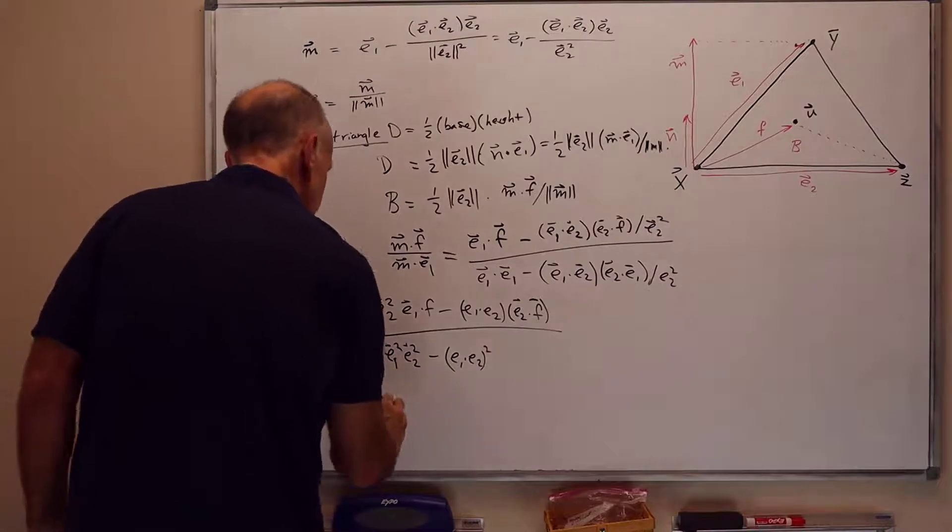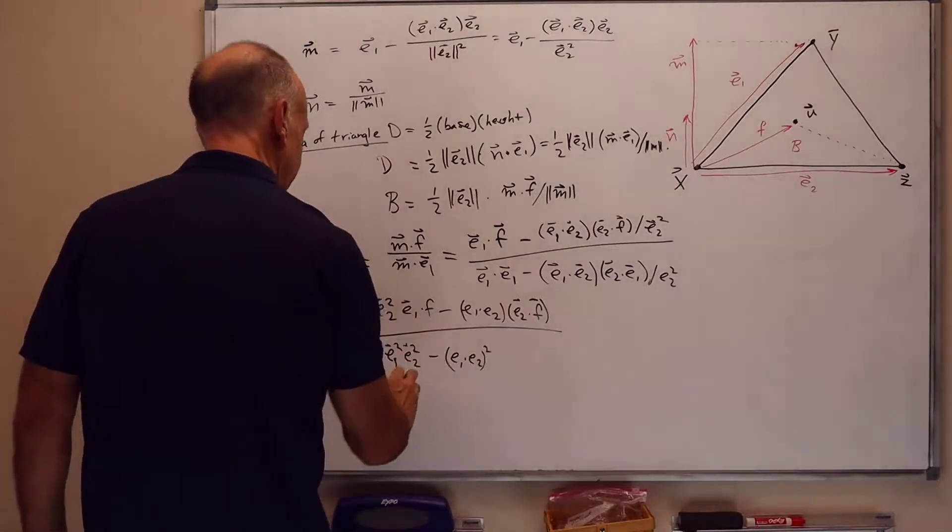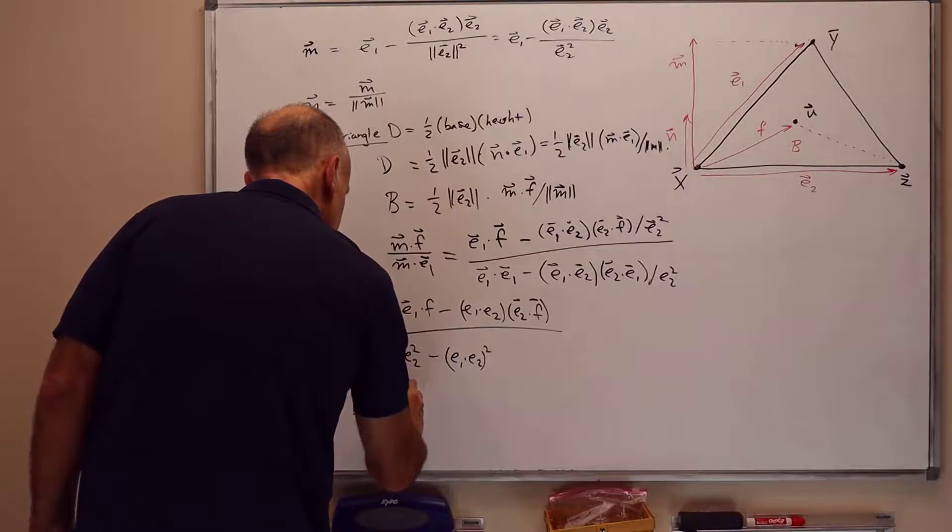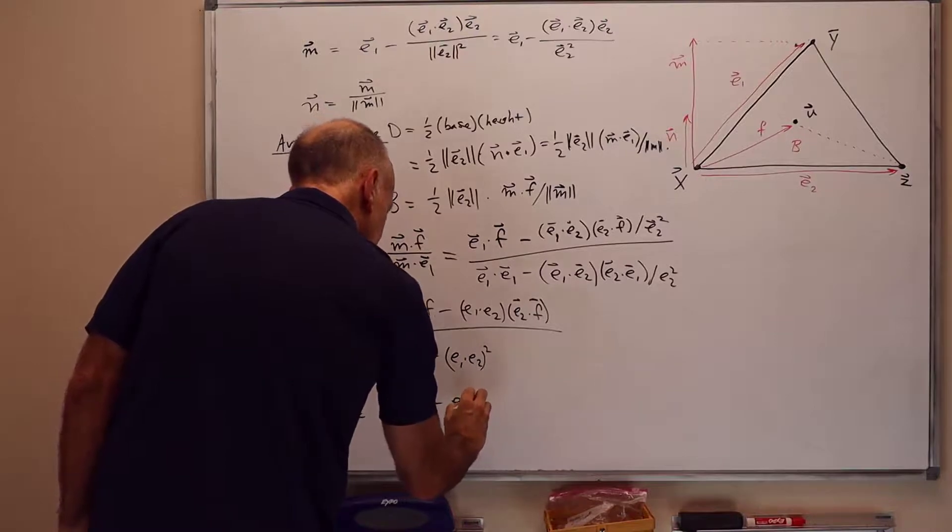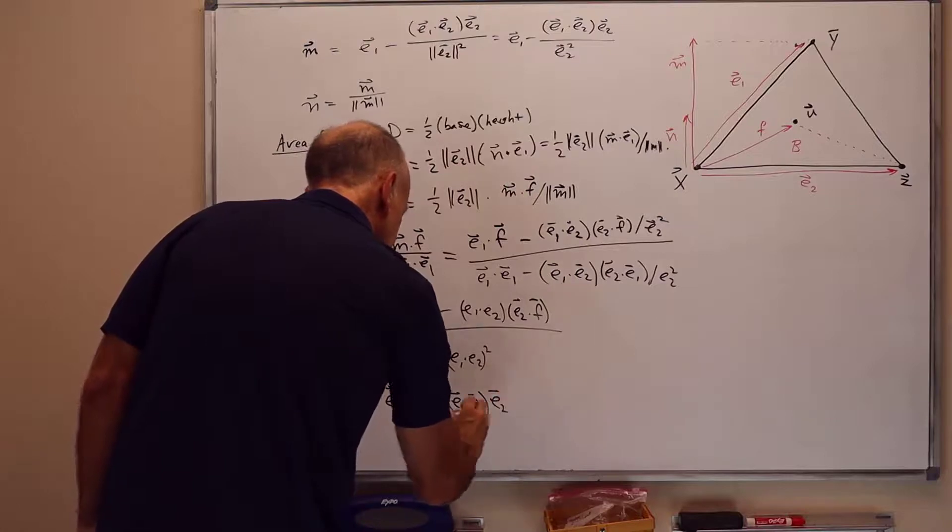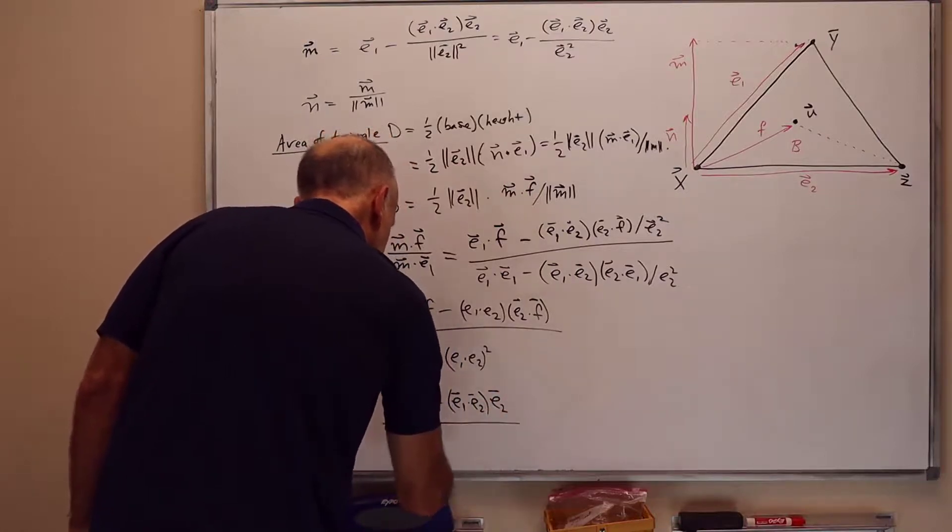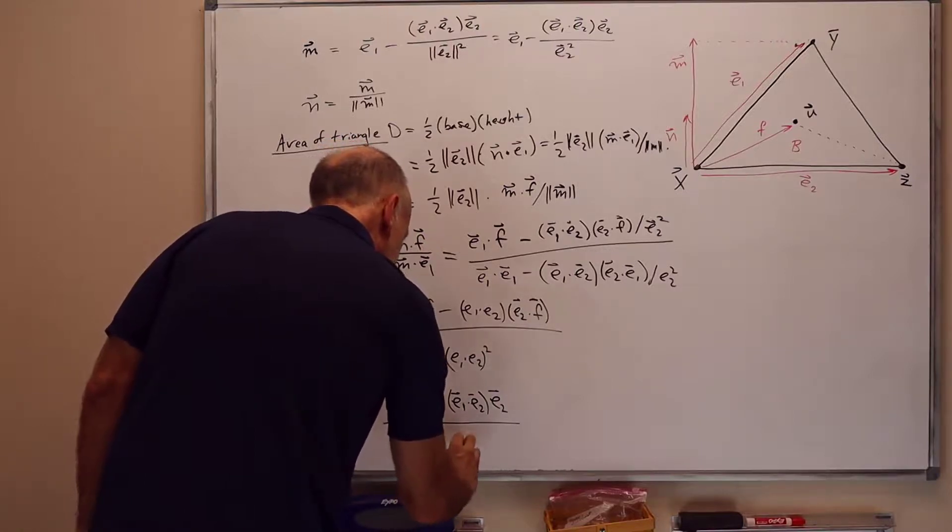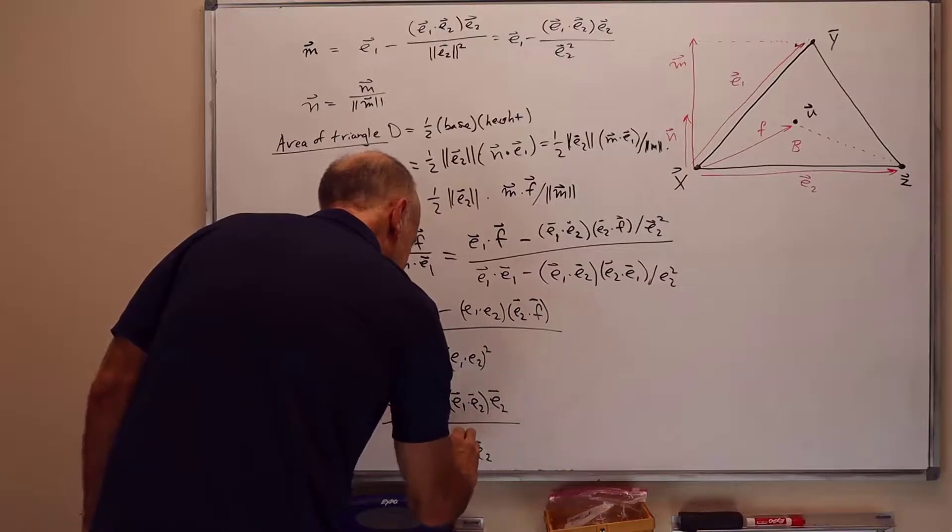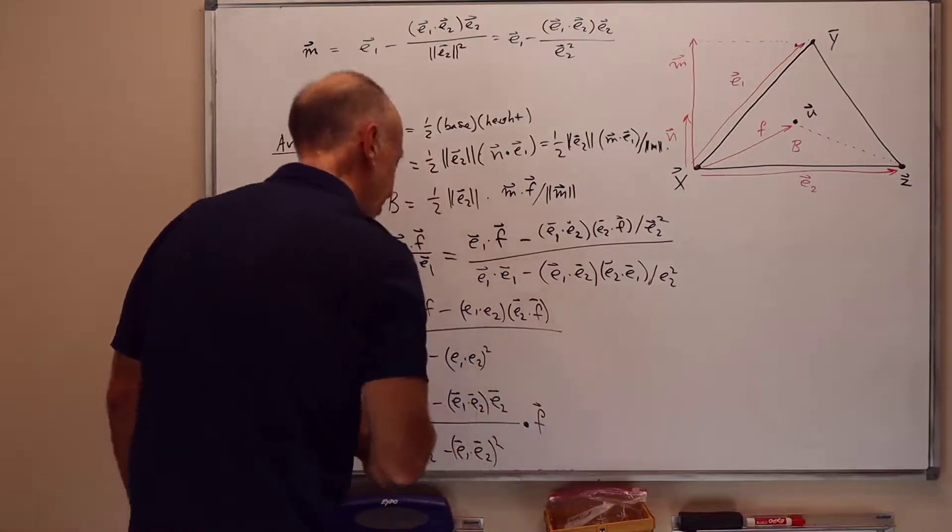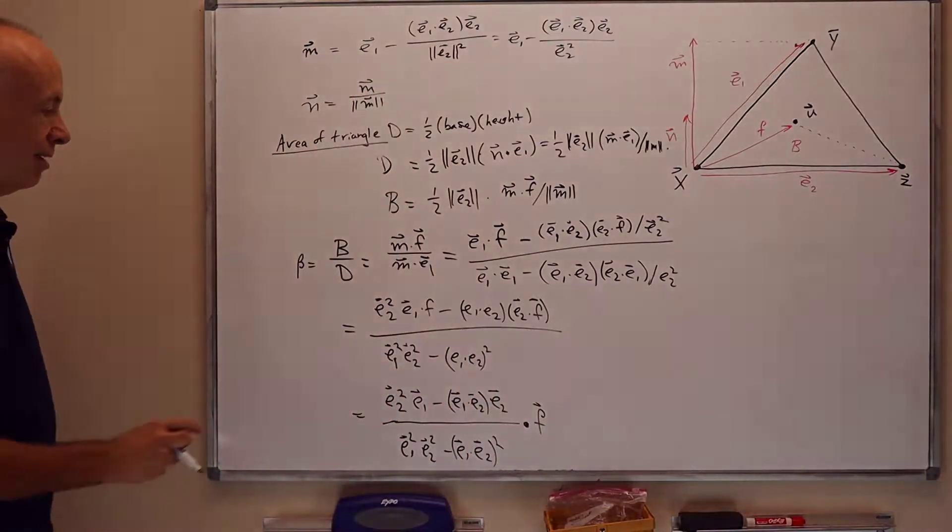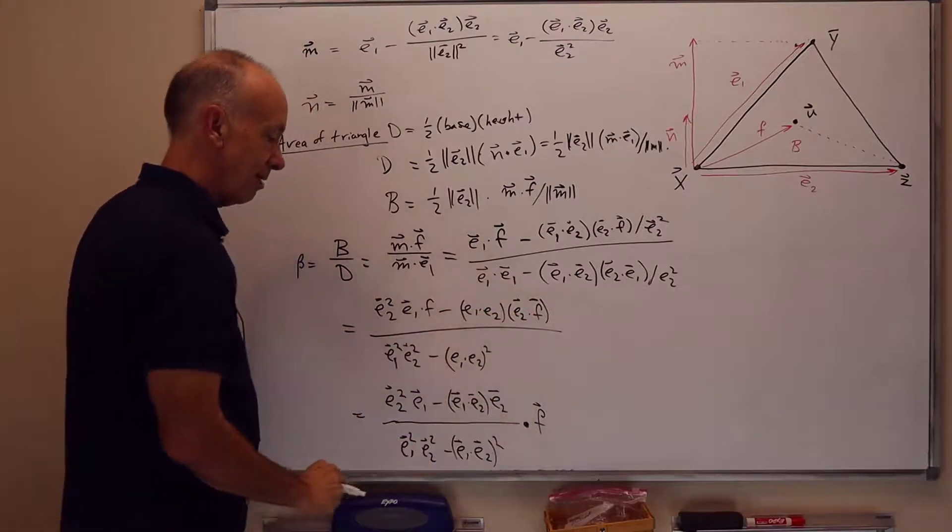So we can rewrite this as, let's pull out this dot f on the top. So this is e2 squared times the vector e1 minus e1 dot e2 times the vector e2 over e1 squared times e2 squared minus e1 dot e2 squared all dot product with f. So I took the dot product with f and pulled it out and everything else.